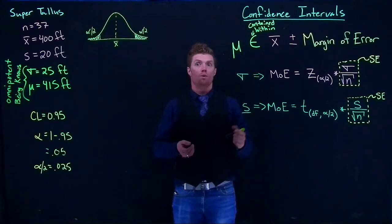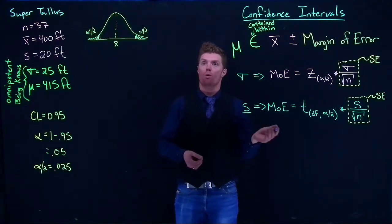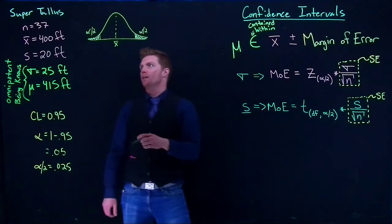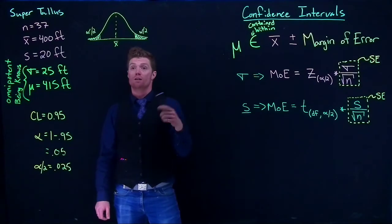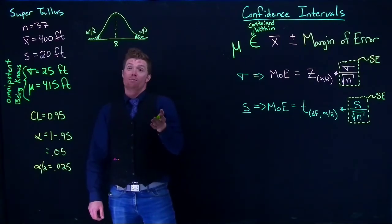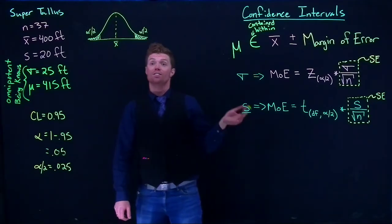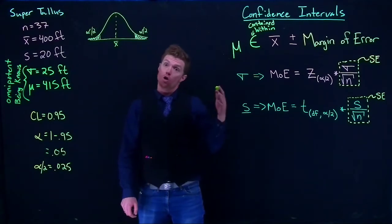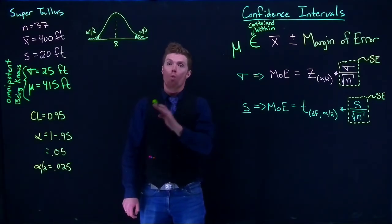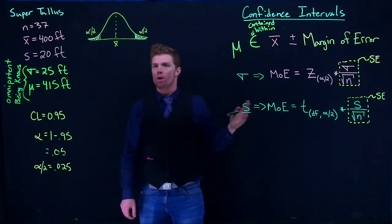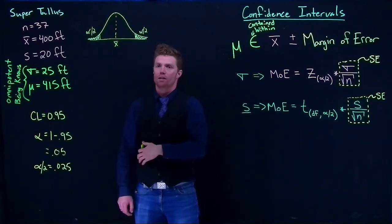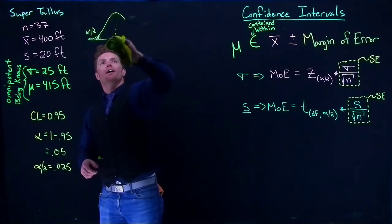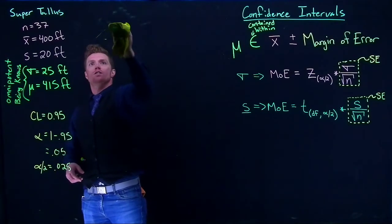But sometimes we might not want to use two-tailed — we might want to throw all of that error to one side or the other. For example, with our tree example with super tallest, maybe I just want to be 95% confident that the true mean height is at least some value, or no more than some value. Those are one-tailed examples, and they are perfectly valid — we just have to modify our equations a little bit.